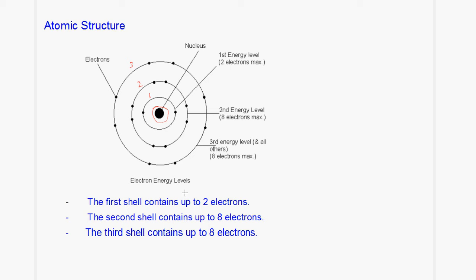The first shell can contain a maximum of two electrons. The second shell can contain up to eight electrons.